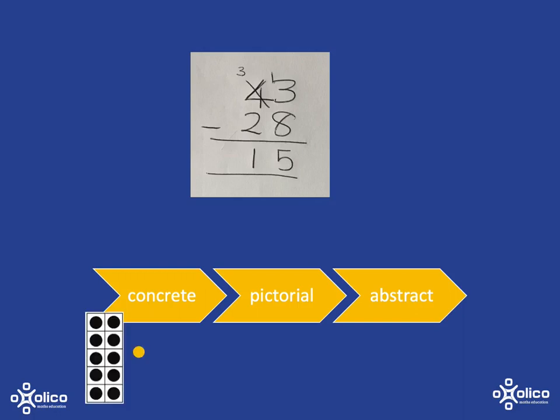For the concrete process, we're going to be using the filled 10 frames and counters, and learners are actually going to physically move those about in order to do the subtractions. As they get more comfortable with that, we're going to start to do a pictorial representation of that alongside it, and then slowly start to add in the abstract representation too. But there is no point in rushing this process. Let learners get completely comfortable at each stage so that they really develop a good understanding that'll allow them to use the skill well.